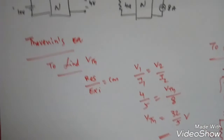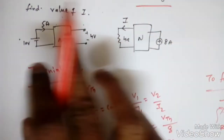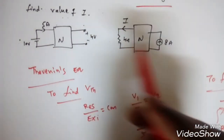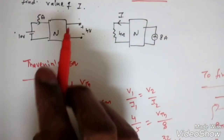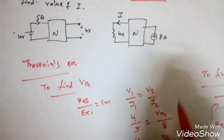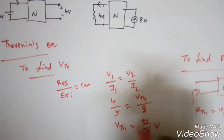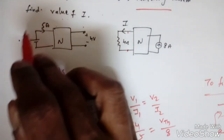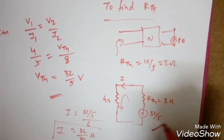In summary, for the Reciprocity Theorem, we find the Thevenin equivalent model. To find Vth, we compare response to excitation: here V/I = 4/5, so Vth / 8 = 4/5, giving Vth = 32/5 V. To find Rth, we always use the first network: 10 V divided by 5 A gives Rth = 2 Ω. Then the current through the 4 Ω resistance is 32/30 A.